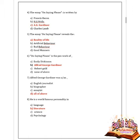Next question: Alfred George Gardiner was an English journalist, biographer, essayist — all of the above. Option D is correct — all of the above. Next question: AG Gardiner is a world-famous personality in what? Options are language, literature, science, and psychology. Option B is correct — literature.